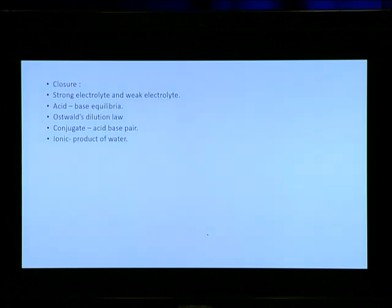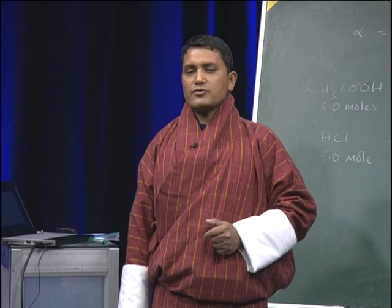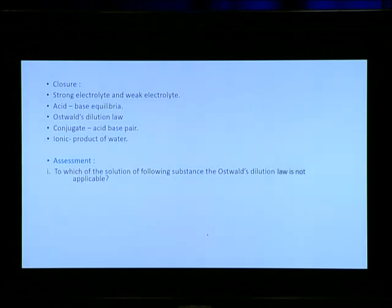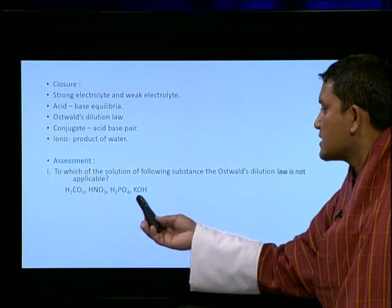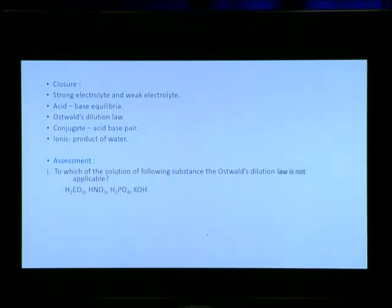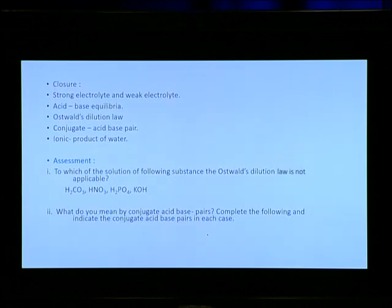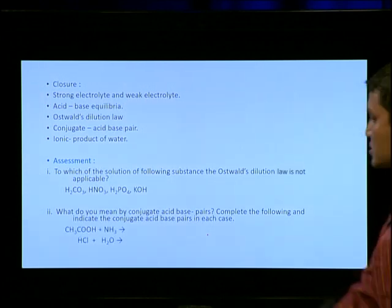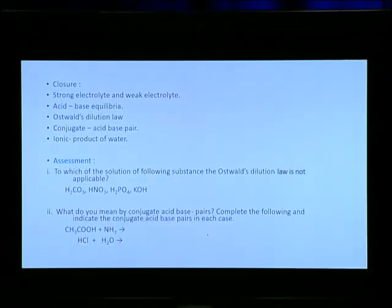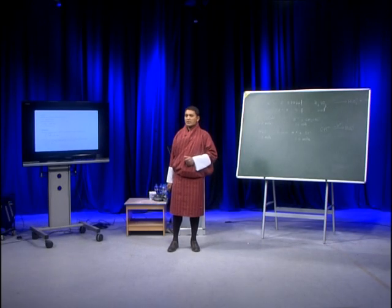Try these questions: To which of the following substances is Ostwald's dilution law not applicable — carbonic acid, nitric acid, phosphoric acid, or potassium hydroxide? Then, what do you mean by conjugate acid-base pair? Also, complete the following reactions and indicate the conjugate acid-base pairs in each case. With this, we have come to the end of today's lesson. I'll see you in the next lesson. Thank you so much.